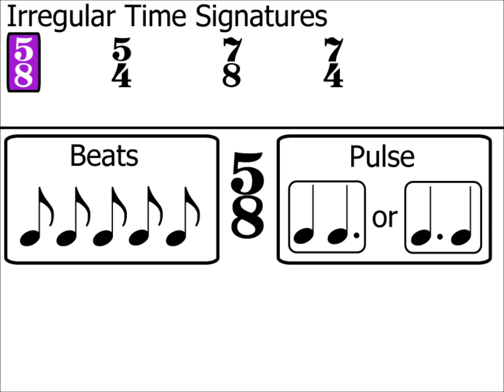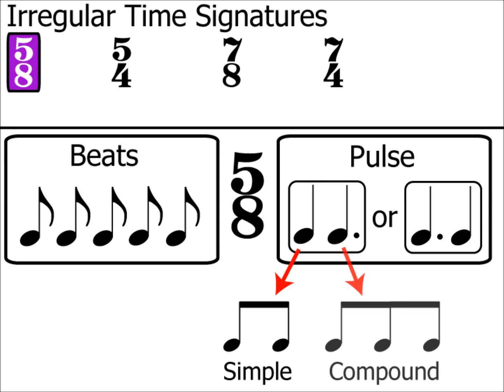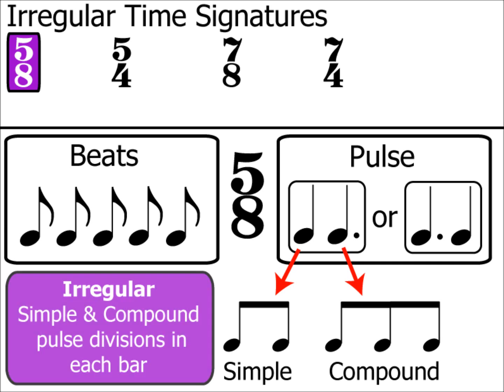Because the crotchet can be split into 2 equal parts, which would indicate simple time, and the dotted crotchet into 3 equal parts, normally compound time, it's absolutely impossible to state whether the time signature is compound or simple. It's for this reason that this type of time signature is called irregular, or sometimes uneven or asymmetrical.